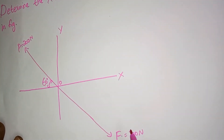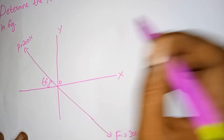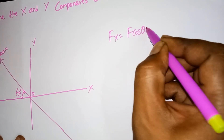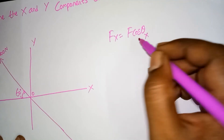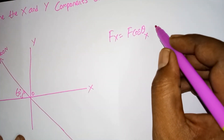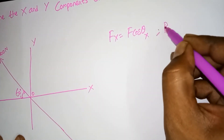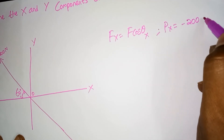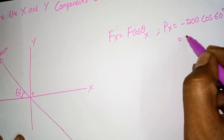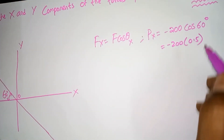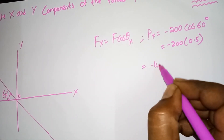We will apply Fx and Fy formulas, and we will find Px and Py. Fx is F cos θx — this we discussed in our last class. Here we concentrate on Px. Px equals minus 200 cos 60°. Cos 60° is 0.5, so we get Px equals minus 100 Newtons, shown in the leftward direction.